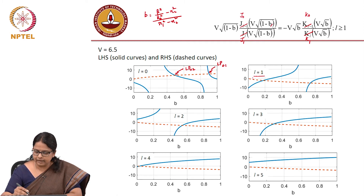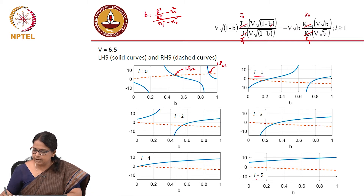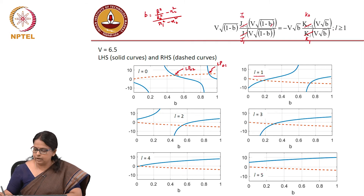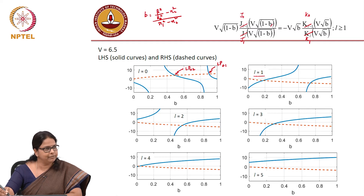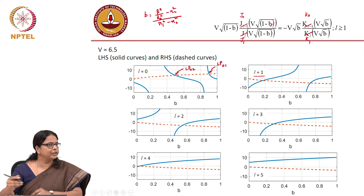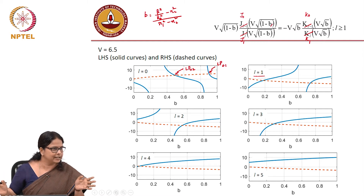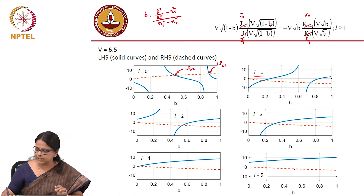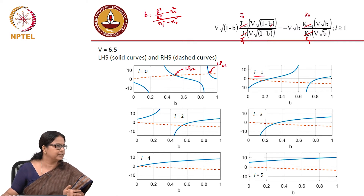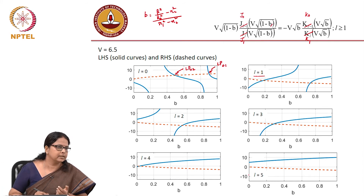For example, in this case when L became equal to 4 (phi), you did not find any point of intersection. For L equal to 4, you would substitute J4 divided by J5, and J4 by J5 did not have a zero or infinity in this range — all values were such that the right-hand side and left-hand side did not have any point of intersection. So from that point onwards, you do not have any modes in the system.